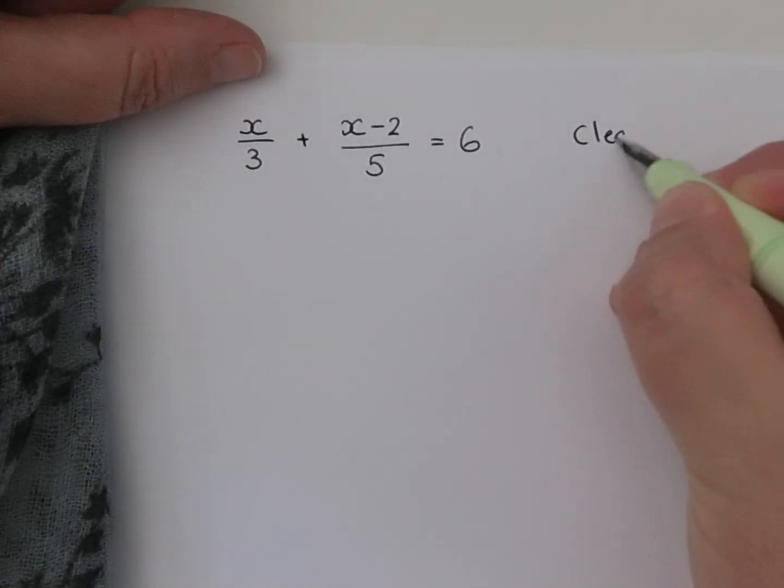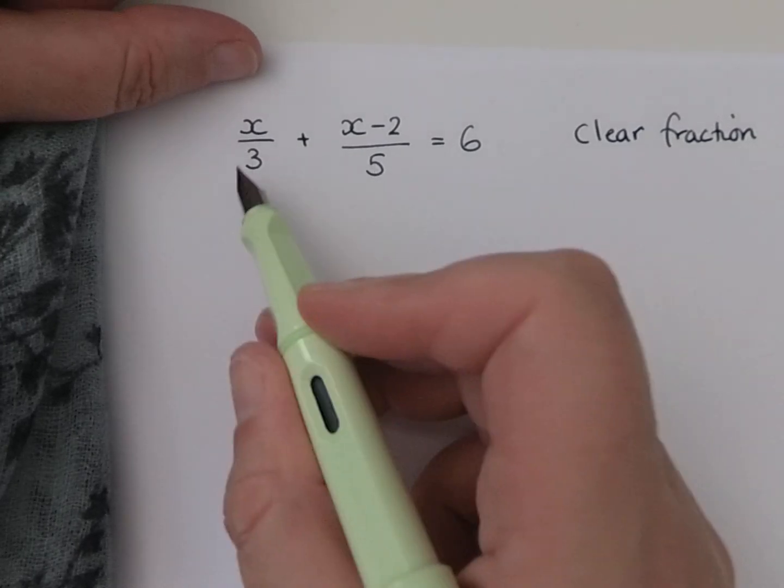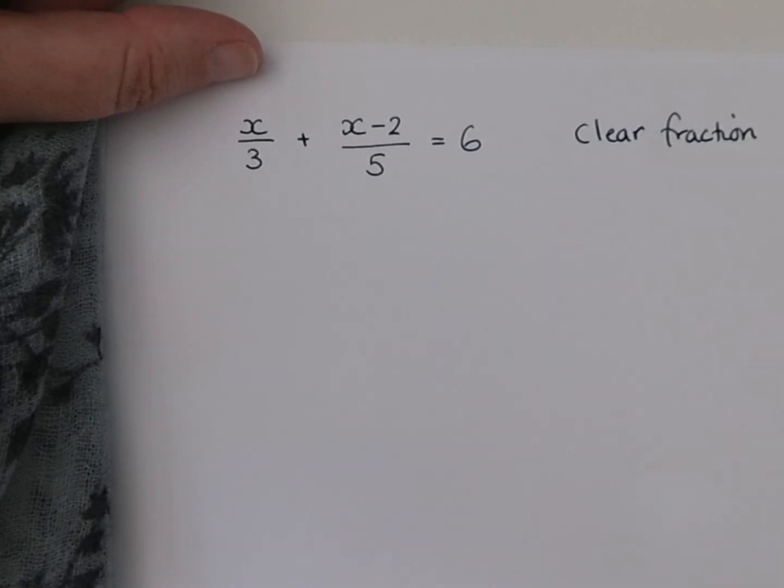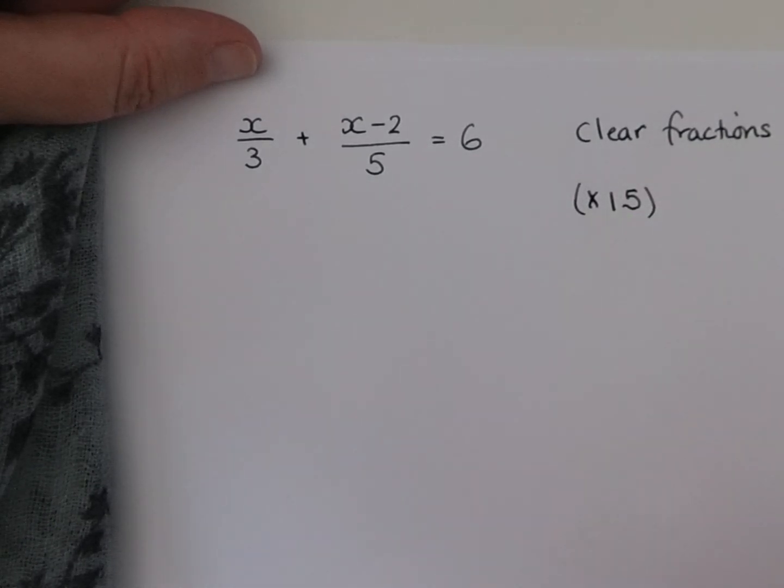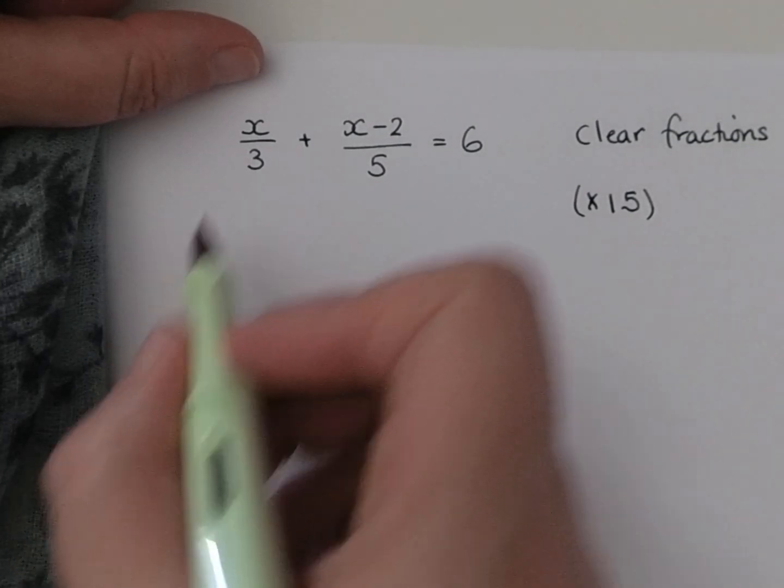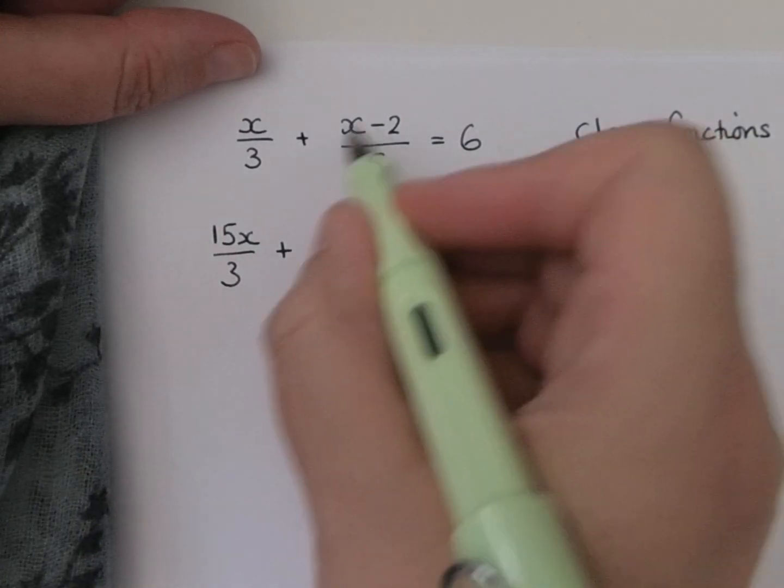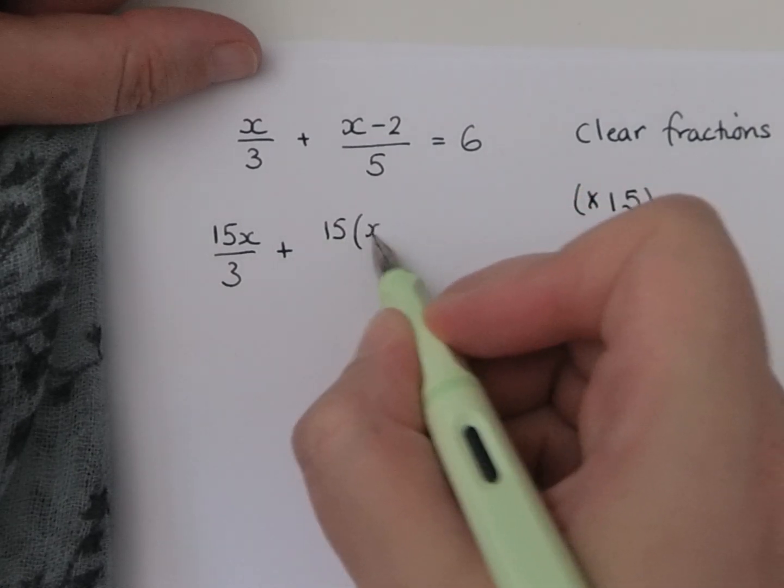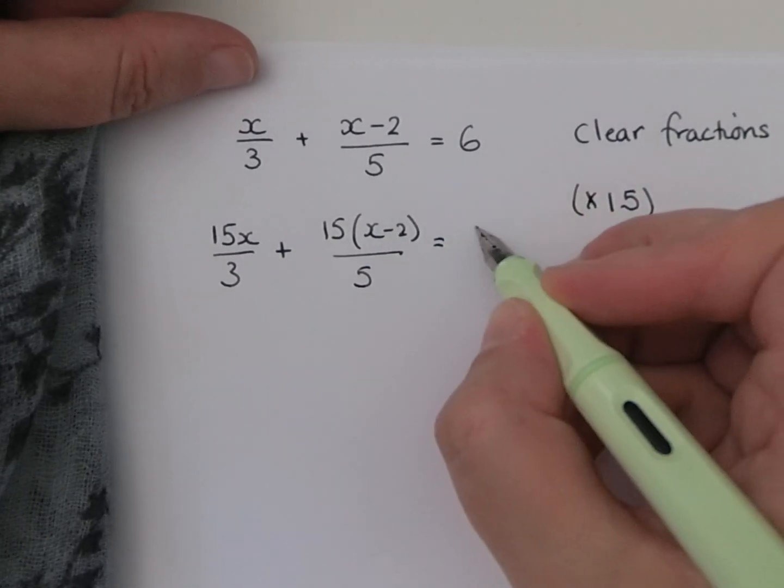In order to do this, we need to work out what the common denominator is for these two fractions. We've got a 3 and a 5 and the lowest number that 3 and 5 both go into is 15. So in order to clear the fractions, we need to multiply both sides of the equation by 15. Taking each part at a time, the x over 3, the multiplying by 15 becomes 15x over 3, plus we end up with 15(x-2) over 5 equals 6 times 15, which is 90.